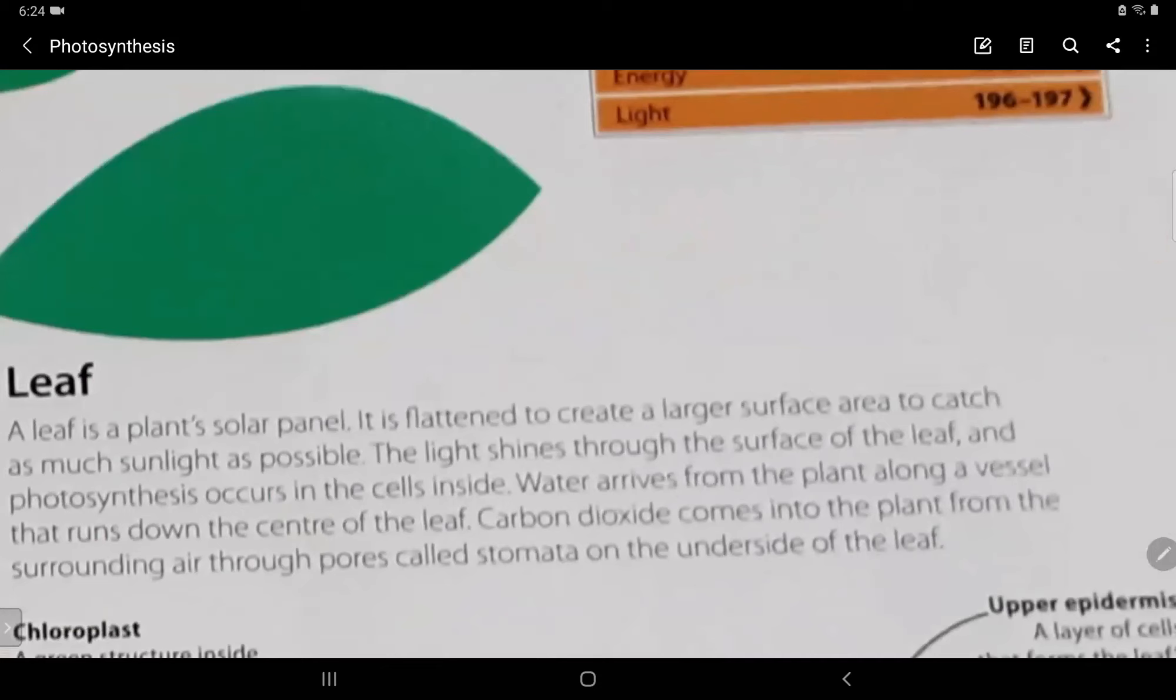Now let's read about the leaf. A leaf is a plant's solar panel. It is flattened to create a larger surface area to catch as much sunlight as possible. The light shines through the surface of the leaves and photosynthesis occurs on the inside. Water arrives from the plant along a vessel that runs down to the center of the leaf. Carbon dioxide comes into the plant from the surrounding air through pores called stomata on the underside of the leaf.